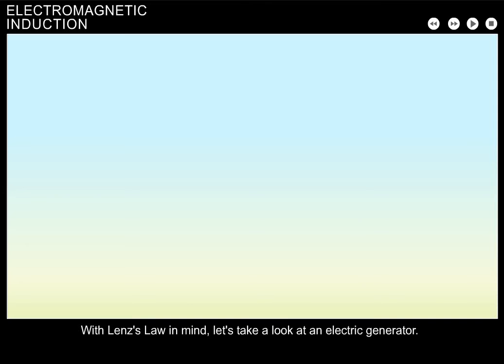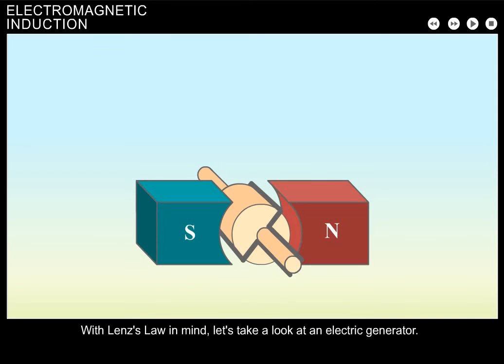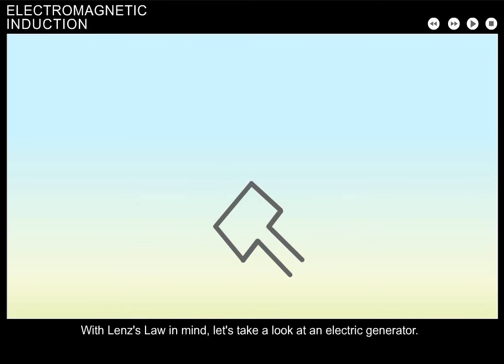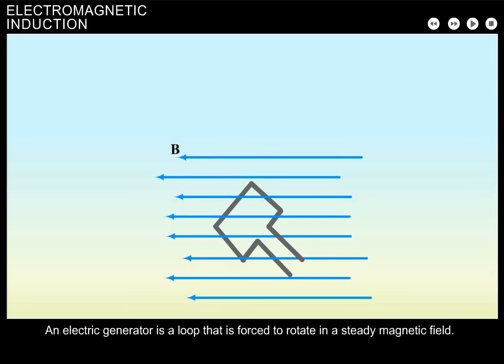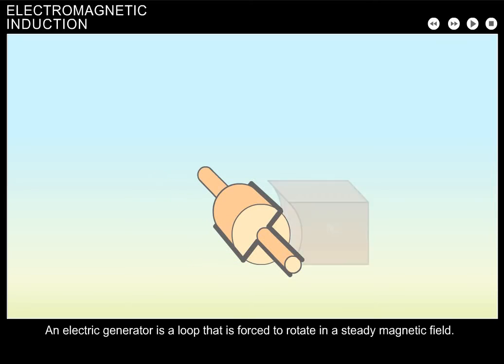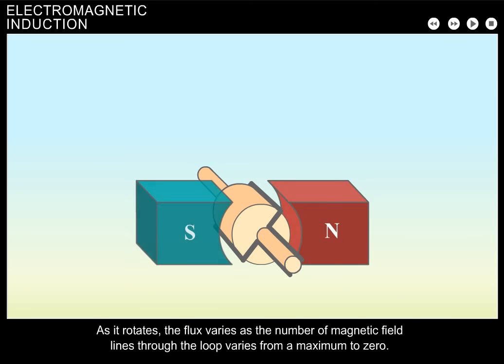With Lenz's Law in mind, let's take a look at an electric generator. An electric generator is a loop that is forced to rotate in a steady magnetic field. As it rotates, the flux varies as the number of magnetic field lines through the loop varies from a maximum to zero.